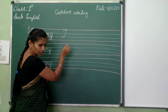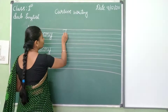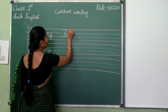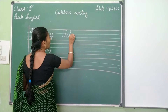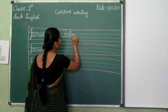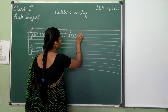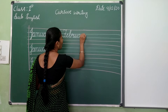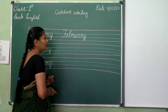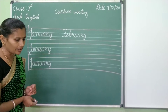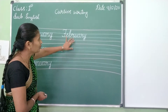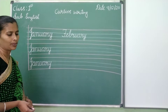Yes. E, B, R, U, A, R, Y, February. Got it? F, E, B, R, U, A, R, Y, February.